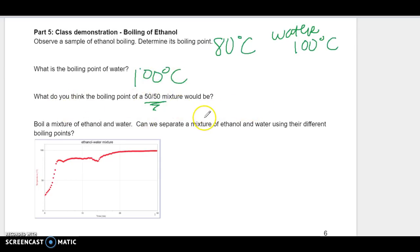So then what do you think the boiling point of a 50-50 mixture would be? If I mix half ethanol and half water, a lot of people would guess that it's going to be some kind of combo of the two, maybe boiling at around 90 degrees Celsius.